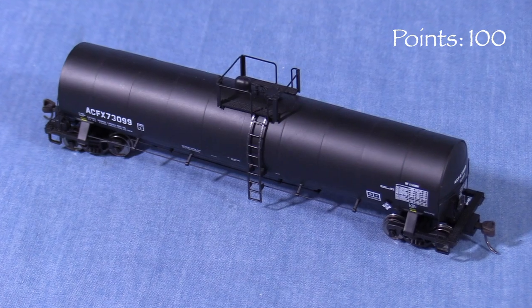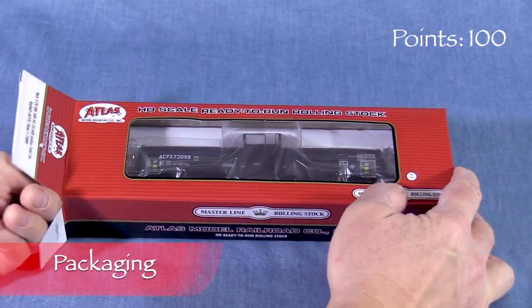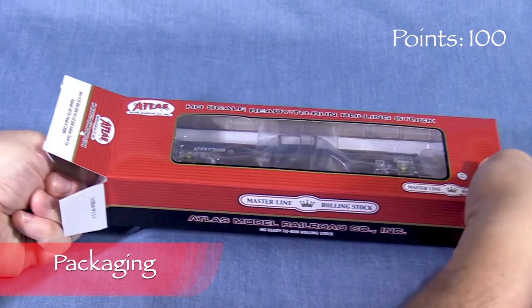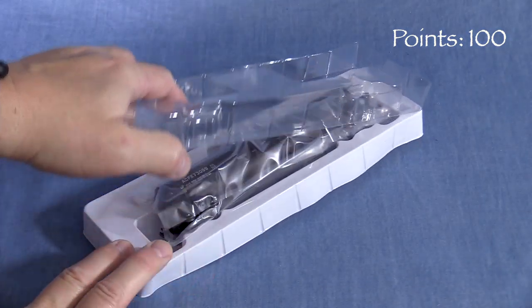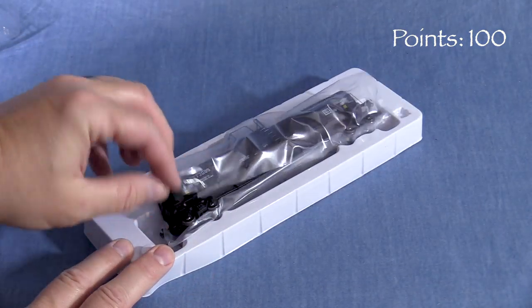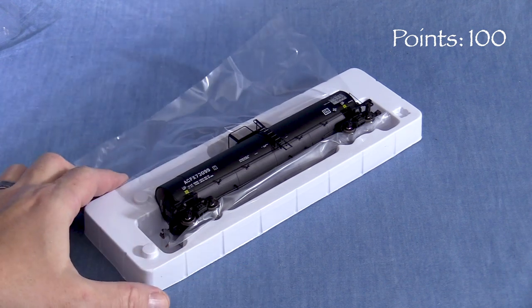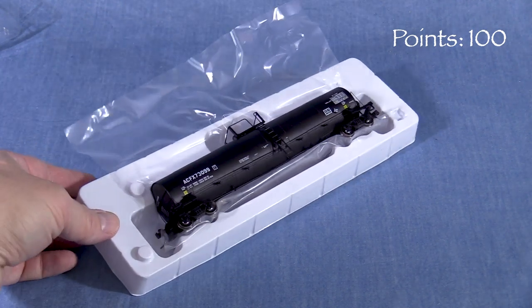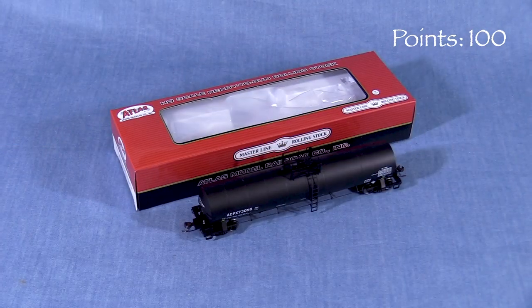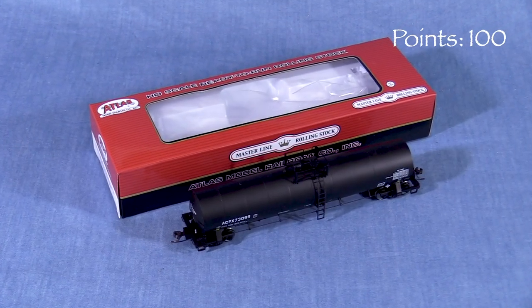The car comes in a cardboard box with a clear plastic window on top. Inside, a two-piece plastic cradle protects the model. A thin layer of soft clear plastic film offers some additional protection against scratches. This is a good box that should protect the model for storage and transport.